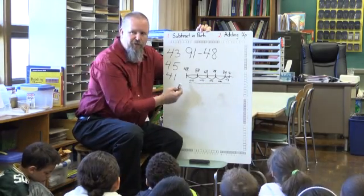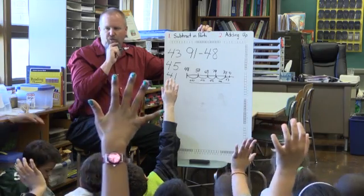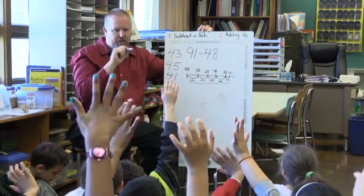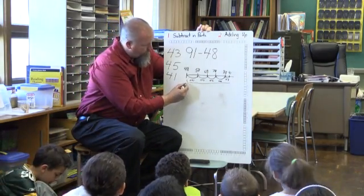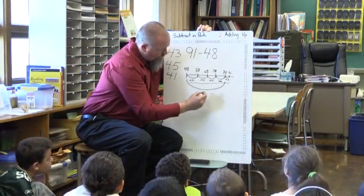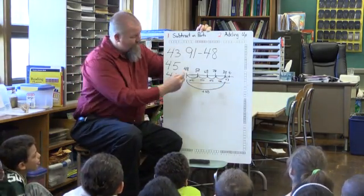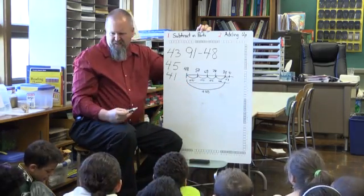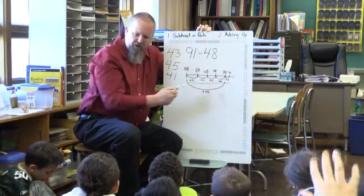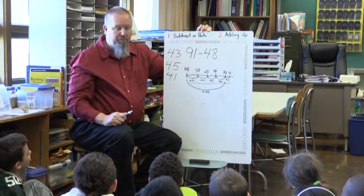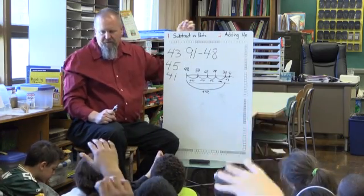Is there a more efficient way to do what she did? Jasleen made a jump of 40 — plus 40 and then plus 3 — instead of doing it by 10s. Did that work? Yes. This is a more efficient way to do it, but both ways get us to the right answer. We're always looking for that more efficient way to do things.